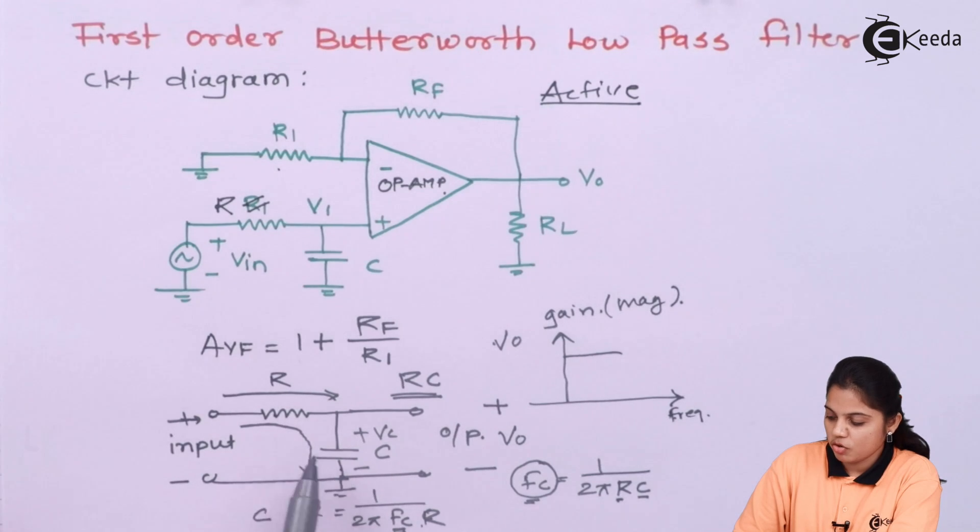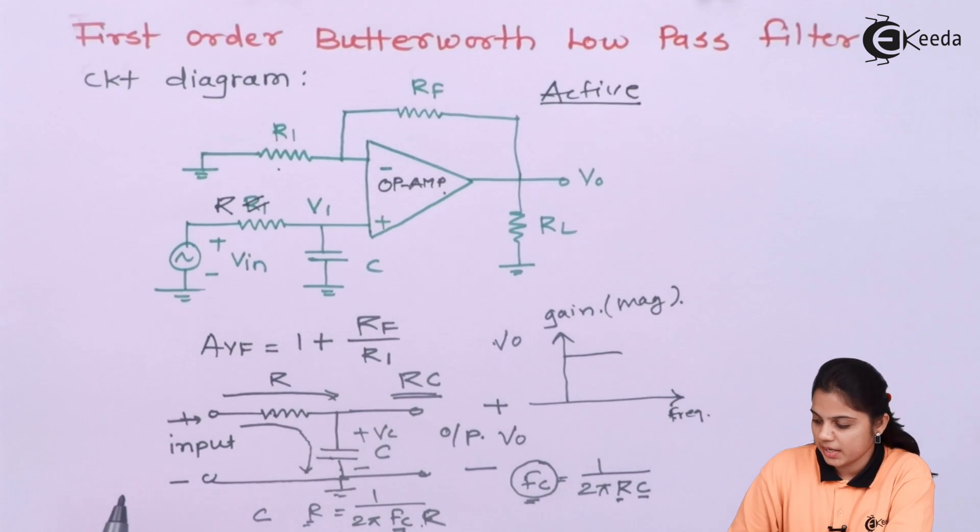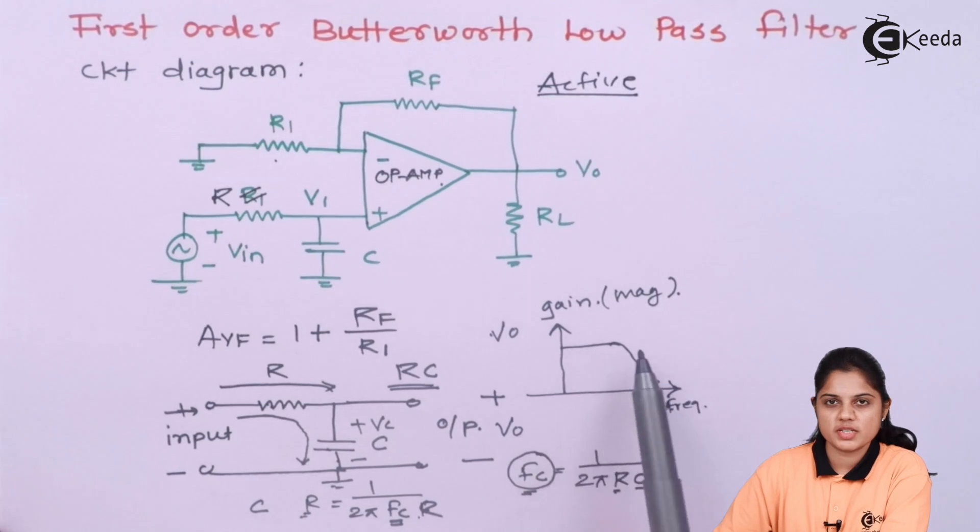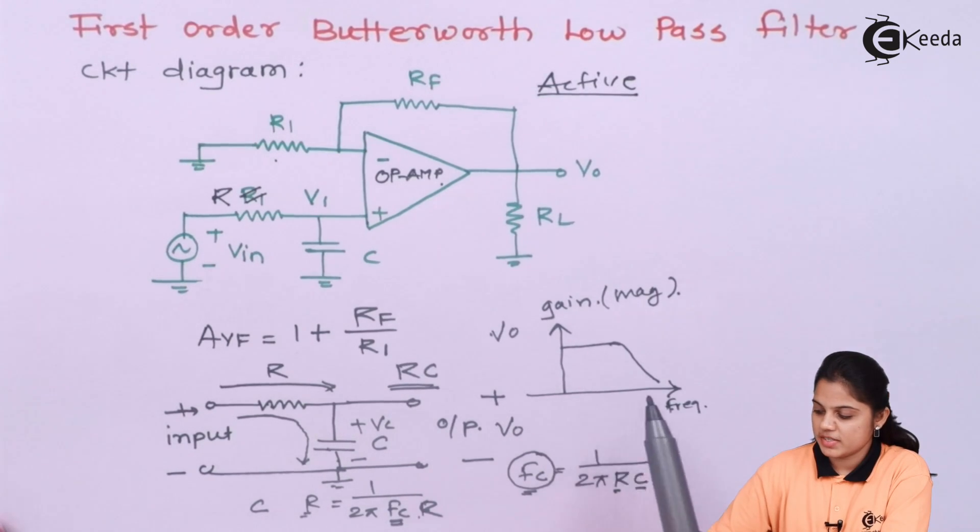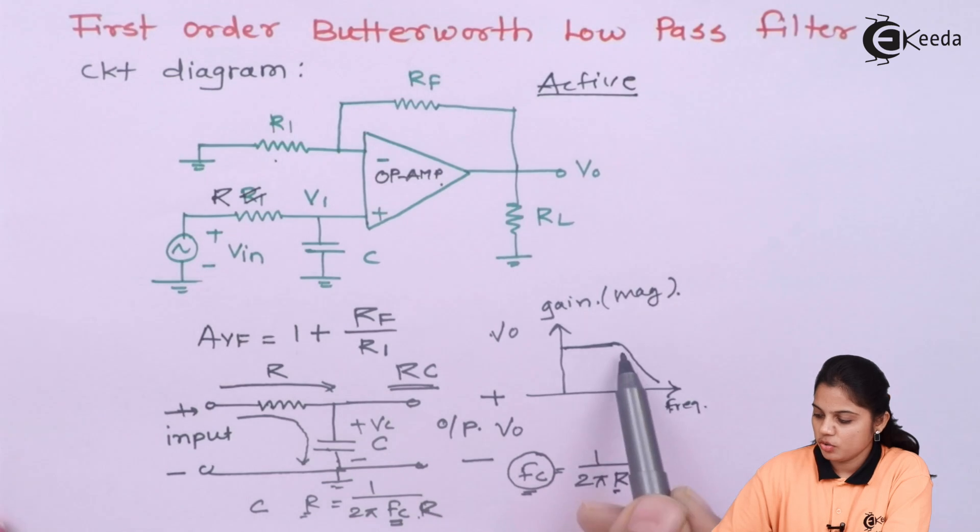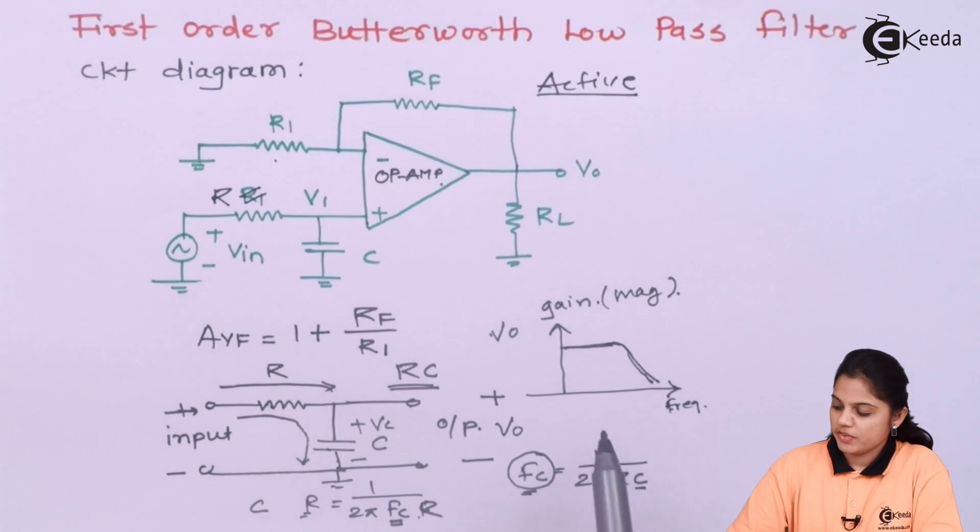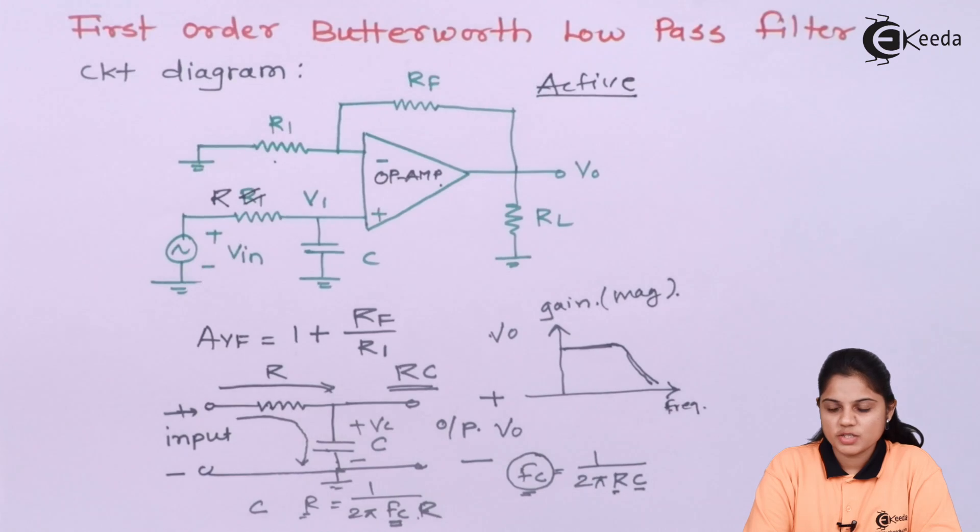So basically, this particular combination of a resistor capacitor is known for a low pass filtering because it will give you the response like this. For a low frequency, your output will be maximum but for the higher frequency, your output goes decreasing. So this is the frequency response for a low pass filtering.